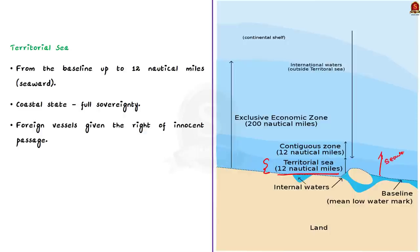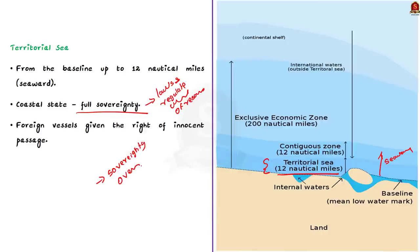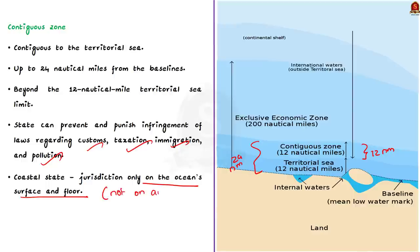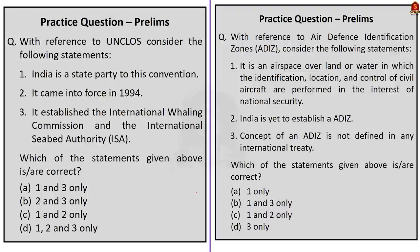Next is the territorial sea — the water from the baseline up to 12 nautical miles on the seaward side of the baseline. Coastal states have full sovereignty, are free to set laws and regulate use of resources, and have sovereignty over airspace above the territorial seas and the seabed and subsoil beneath. Foreign vessels are given the right of innocent passage here. Next is the contiguous zone — contiguous to the territorial sea, up to 24 nautical miles from the baseline, meaning beyond the 12 nautical mile territorial sea limit. Here a state can enforce laws in four specific areas: customs, taxation, immigration and pollution. Importantly, in the contiguous zone, a state has jurisdiction only on the ocean surface and floor — it does not have air and space rights.